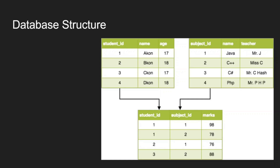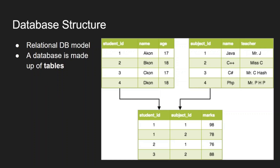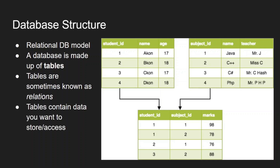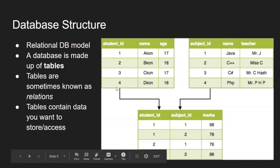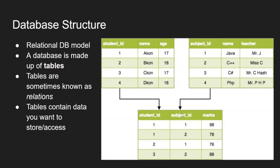Is everyone okay so far? So for database structure, we're looking at the relational database model because that's the format SQL communicates with. In relational database models, a database is made up of tables — also called relations. These tables contain the data you want to store in your web app. The reason it's called a relational database model is that there are relationships drawn between different tables, which are also declared in your database.